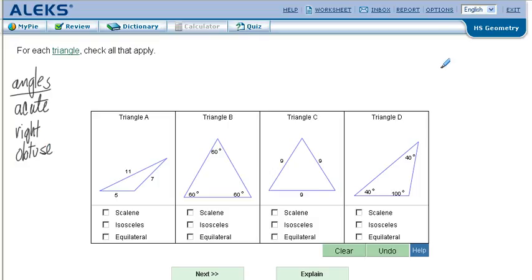We could also classify triangles by their sides. If the triangle has no congruent sides, in other words they are all different, we call that scalene.